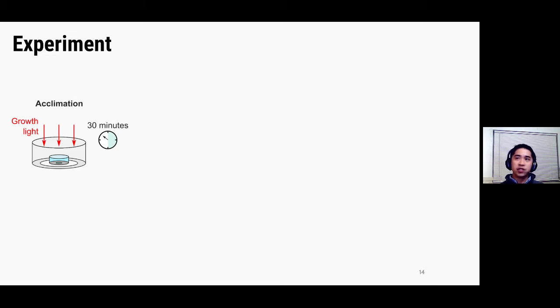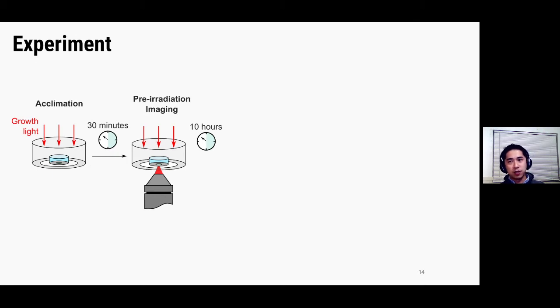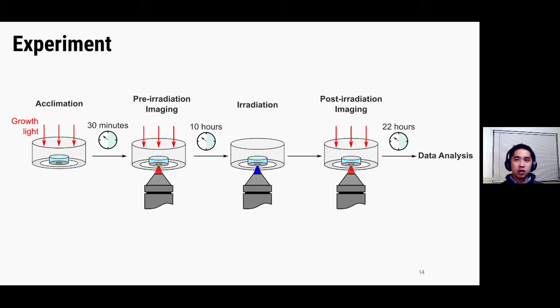The agar pad is then placed into an imaging dish, and I then leave the dish on the microscope with the growth light and the heating chamber on for about 30 minutes to let cells acclimatize. The cells are then imaged every 30 minutes for 10 hours, which allows us to observe the first few cell doublings. The cells are then exposed to an amount of blue light, about 440 nanometers, to induce photo damage. And then they were imaged for another 22 hours to see if they would recover. Now this whole experiment is basically programmed into the microscope, so all I had to do is basically click the run button.